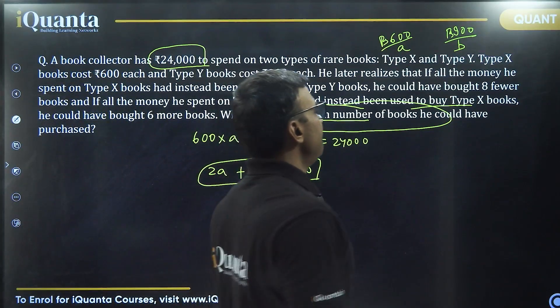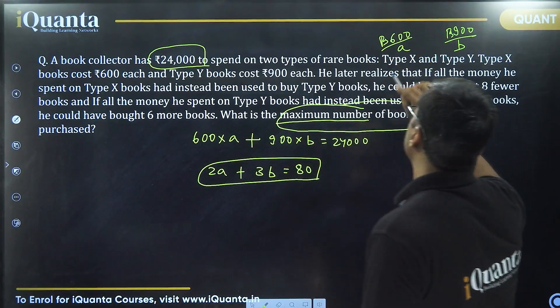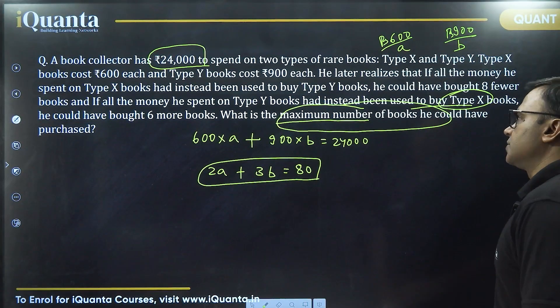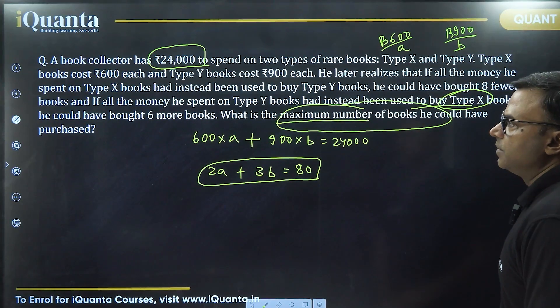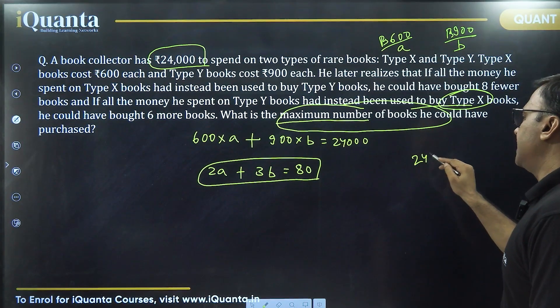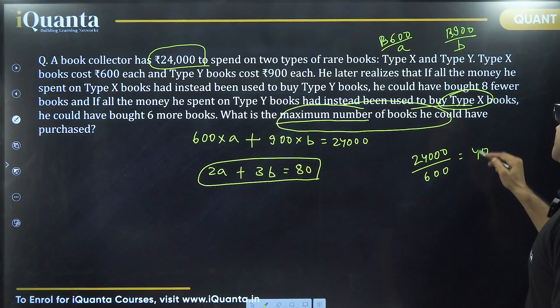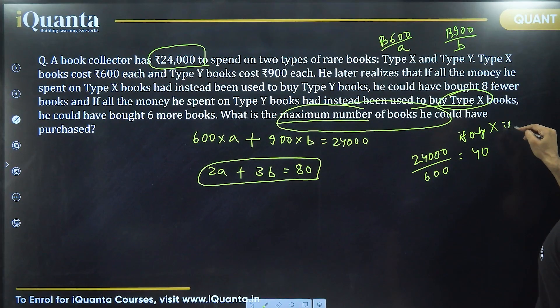Now look at the second information. Because 24,000 is divisible by 600 but not by 900, if I'm buying only type X books, if only type X books are bought, then the number of books that can be bought is 24,000 by 600 and that is equal to 40.